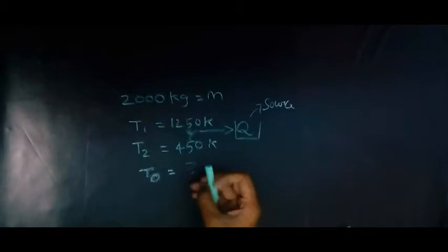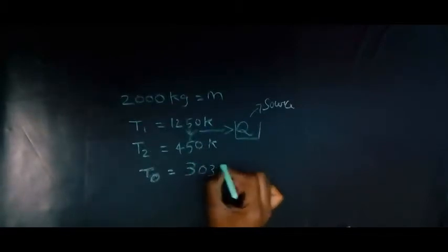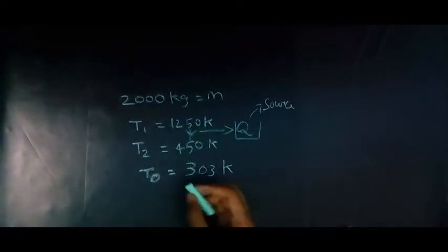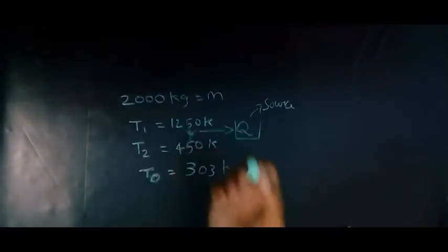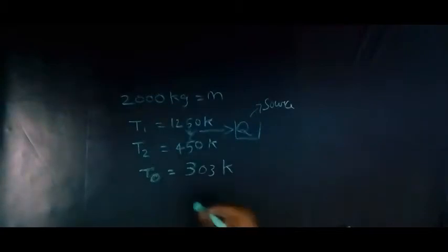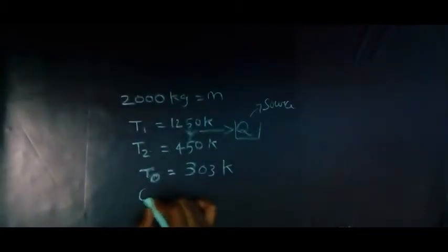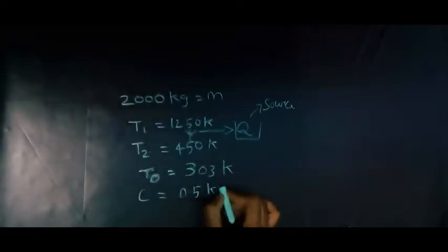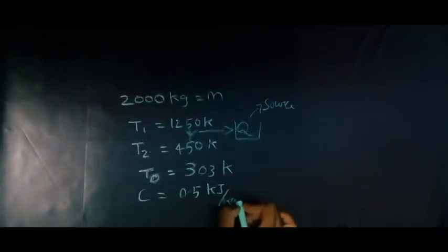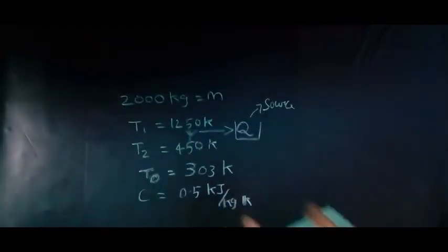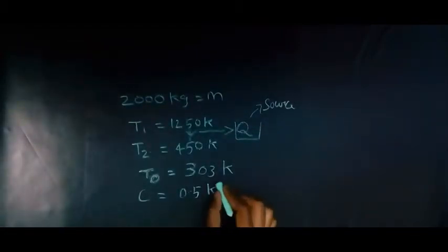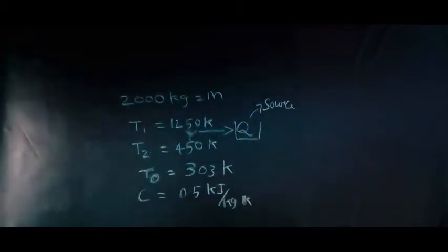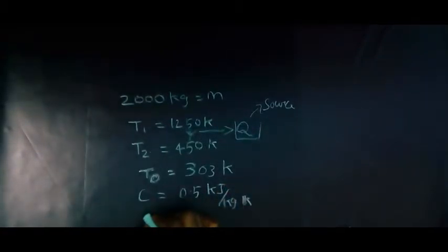The specific heat of steel—it is a steel billet—so they have given the specific heat, it is 0.5 kJ per kg K. While practicing problems, have a habit of writing the unit so that it will be easy for you to remember. The available energy of this billet.